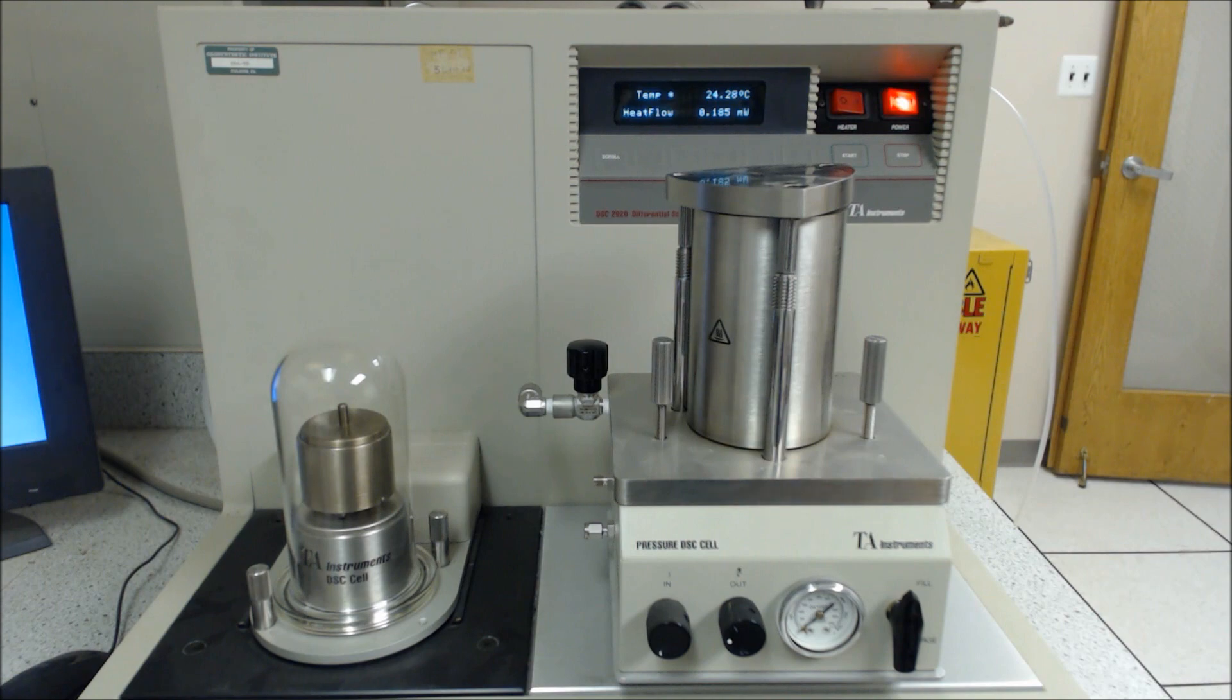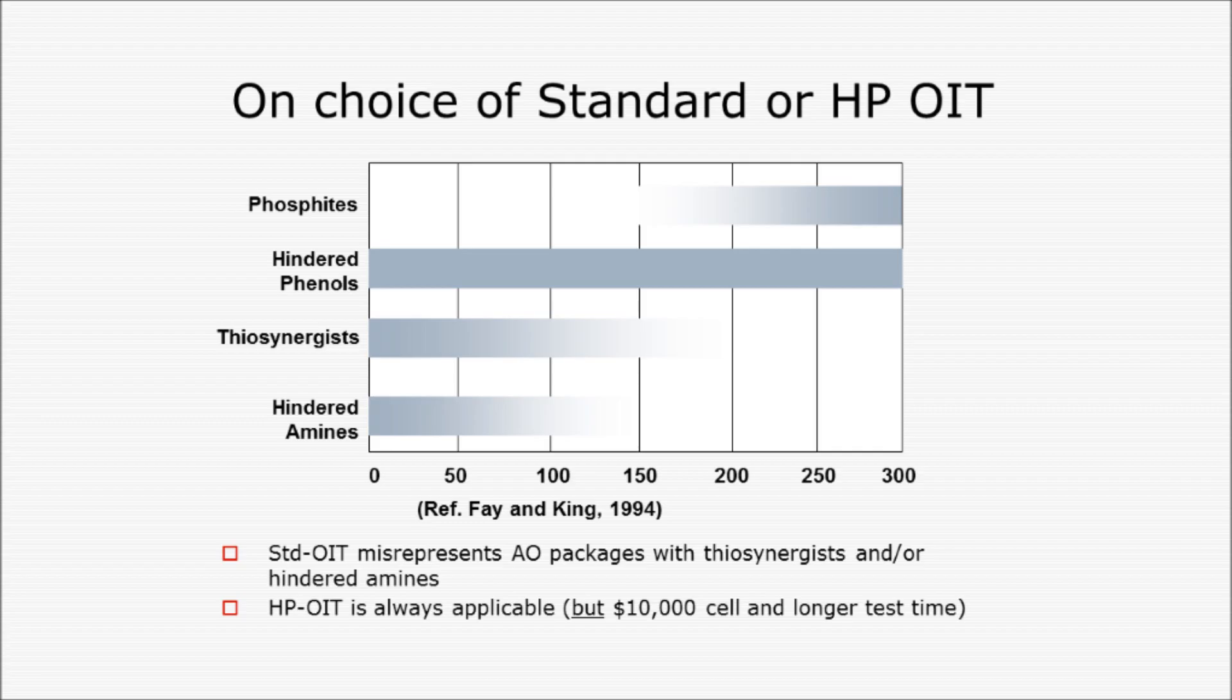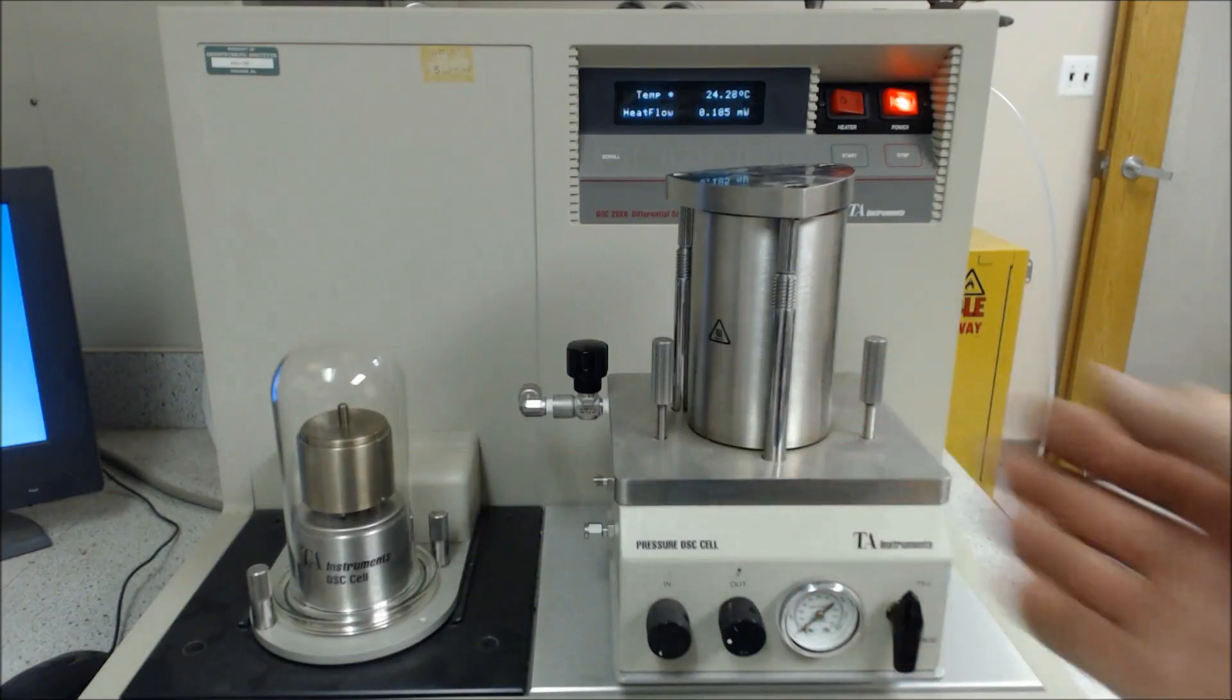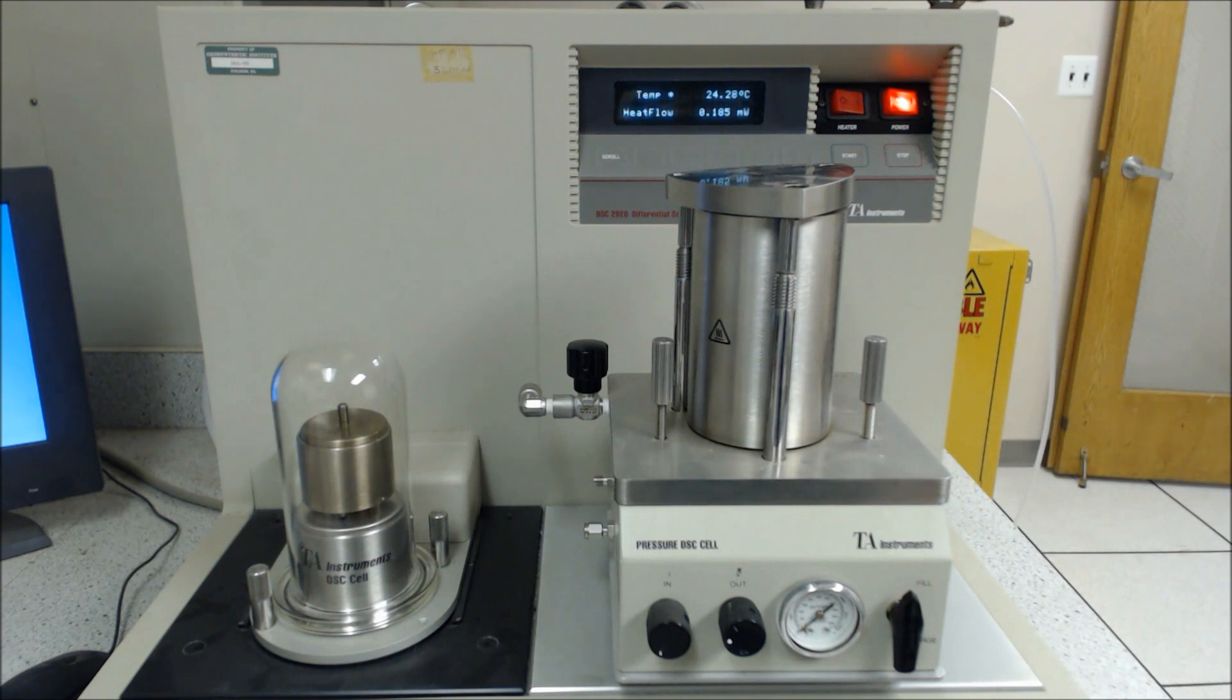On the left you can see the DSC cell used for running an OIT test at a pressure of 34 kilopascals or 5 psi, and on the right you can see the high pressure cell used to run HP OIT at a pressure of 3400 kilopascals or 500 psi.